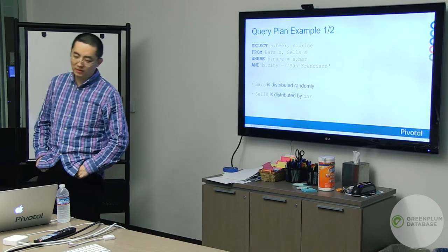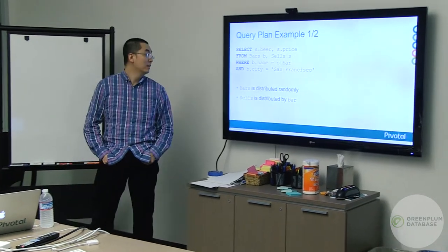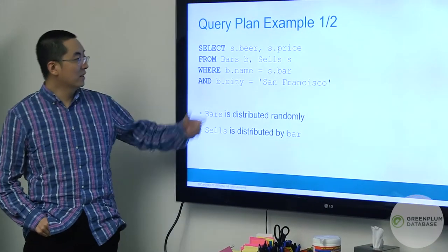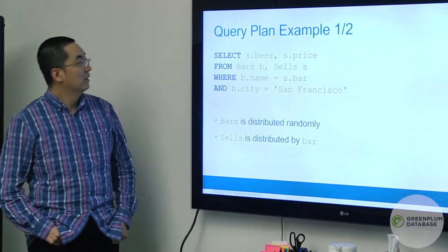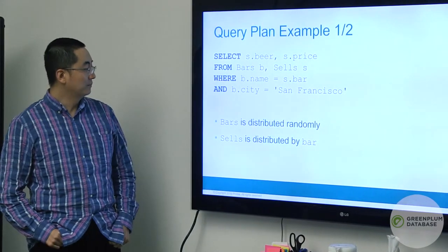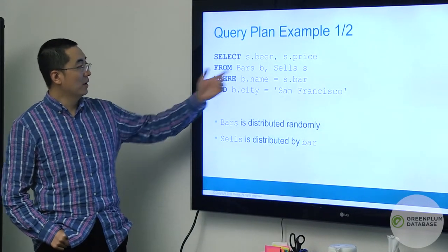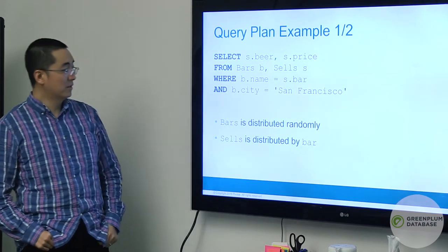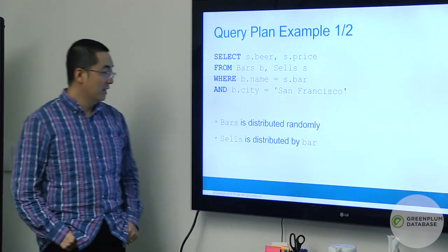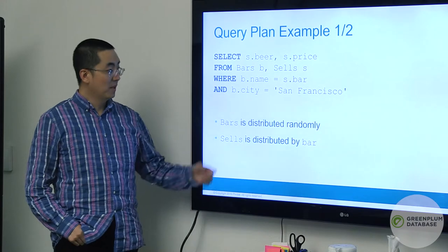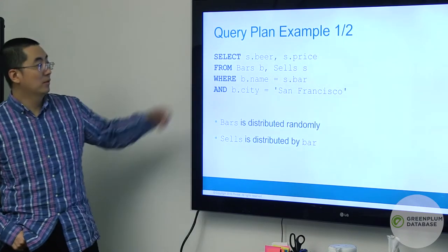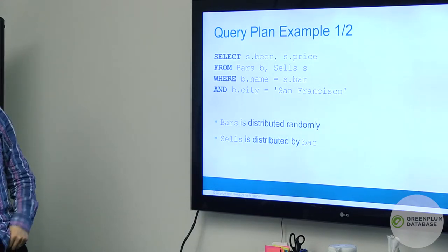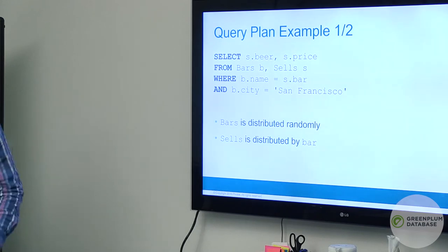Here's a very simple example. We're trying to find all the beers in San Francisco. We have two tables: bars and cells. Bars is distributed randomly, and cells is distributed by bar. You join those two things together to find the bar serving beer in San Francisco.